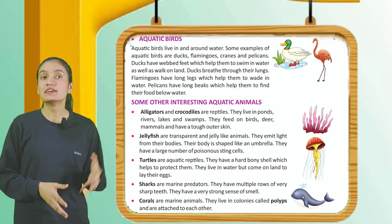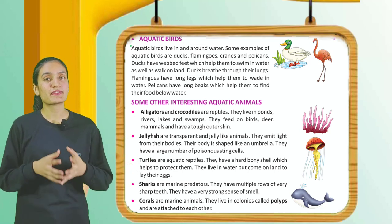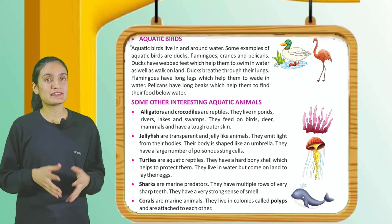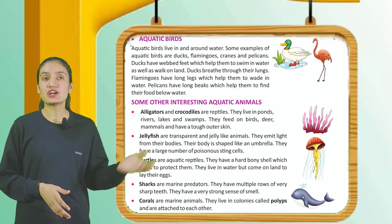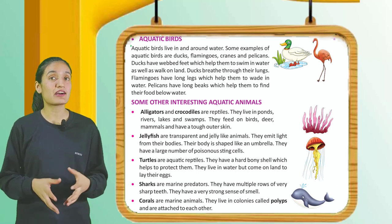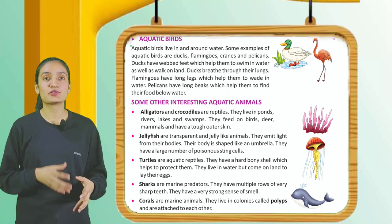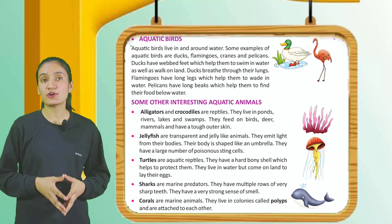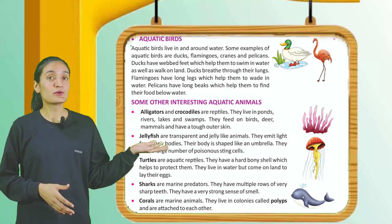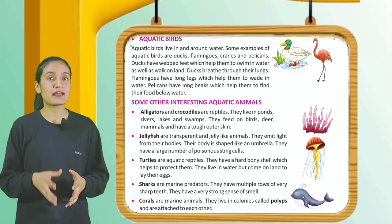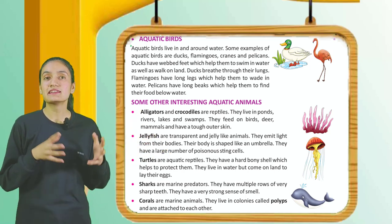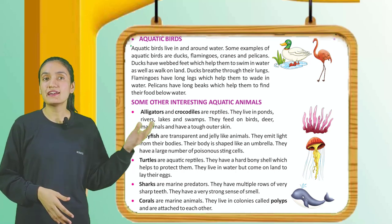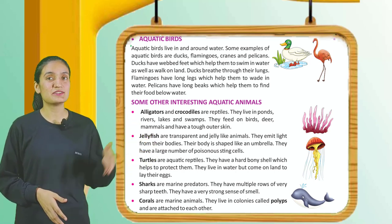Turtles are aquatic reptiles with a hard bony shell that helps protect them. They live in water but come on land to lay their eggs. Sharks are marine predators with multiple rows of very sharp teeth and a very strong sense of smell. Corals are marine animals that live in colonies called polyps and are attached to each other.